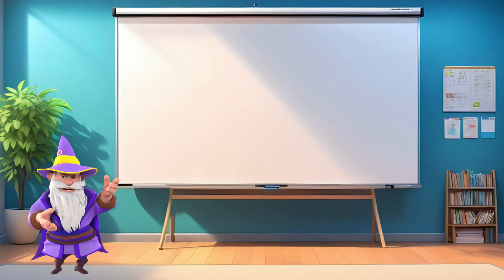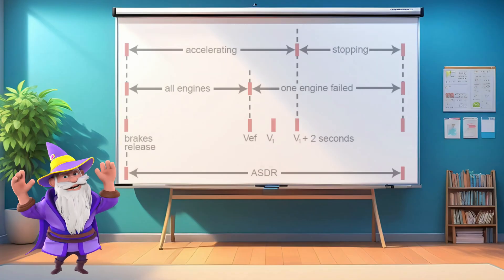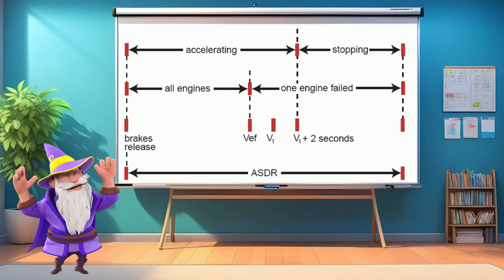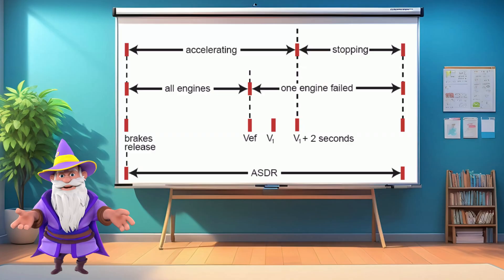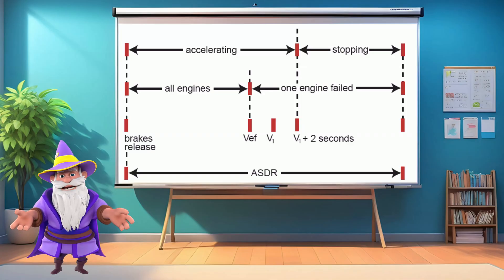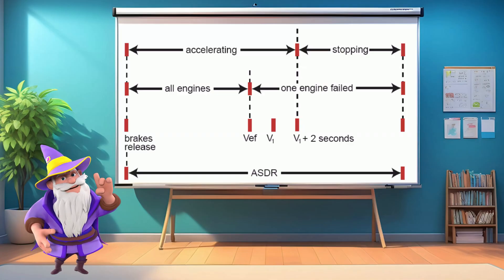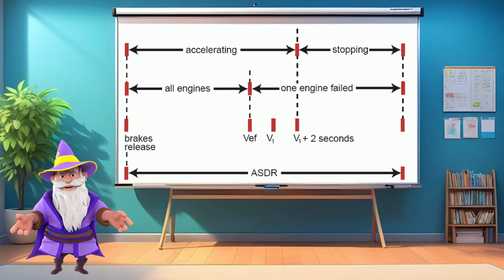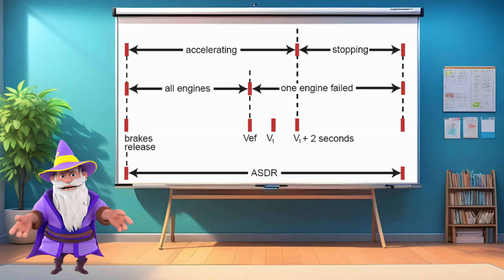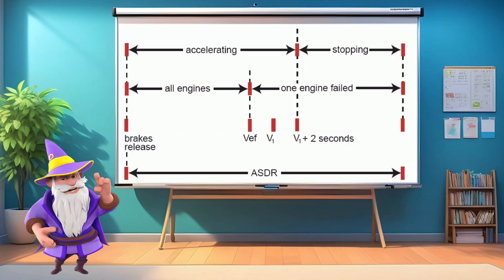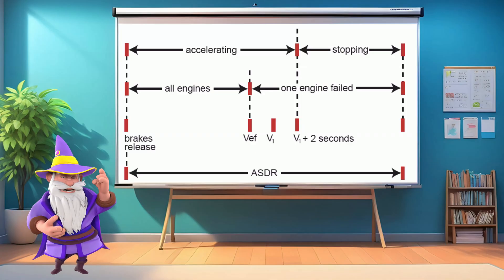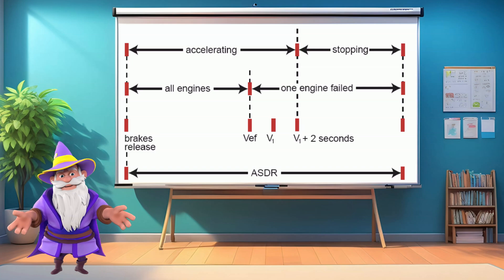Now let's see if we can abort the takeoff. The accelerate stop distance required is the total distance an aircraft needs to accelerate to decision speed V1, continue accelerating for two seconds, and then abort the takeoff safely, coming to a full stop. Why two seconds? That is the pilot reaction time to an event. If accelerate stop distance required is greater than accelerate stop distance available, rejecting the takeoff at V1 could result in a runway overrun, making it a no-go situation.